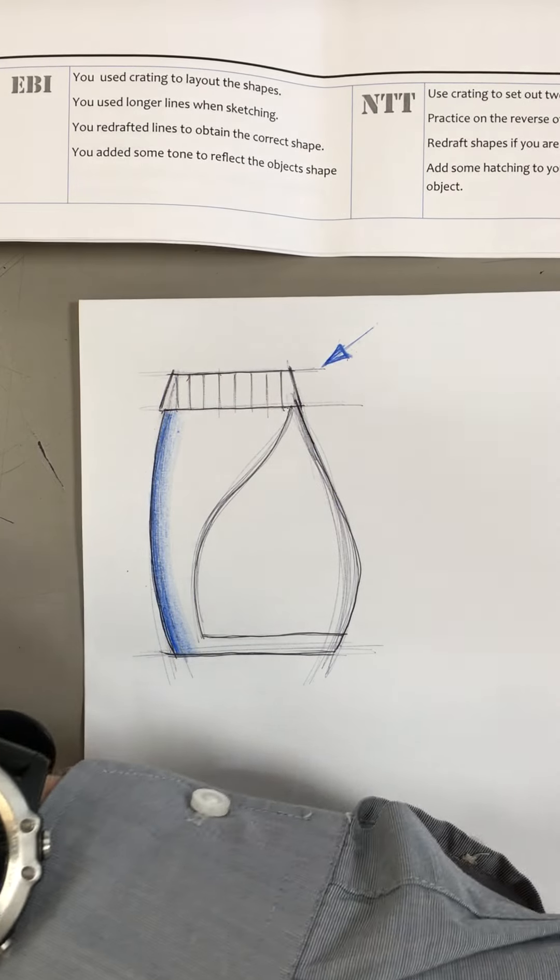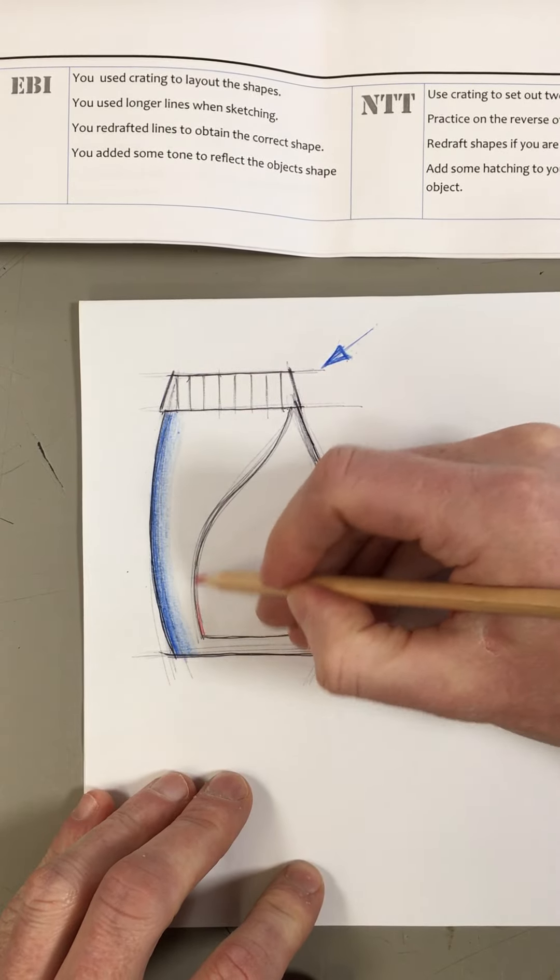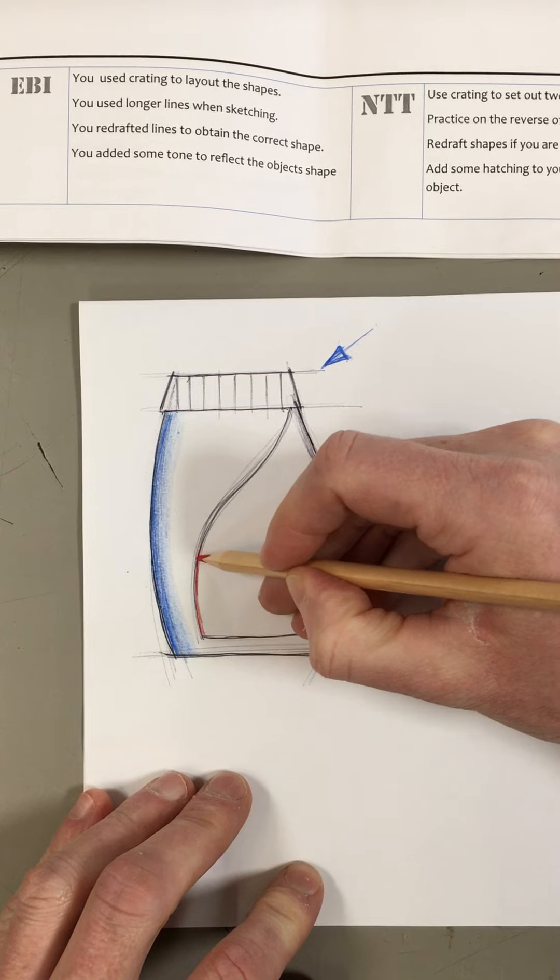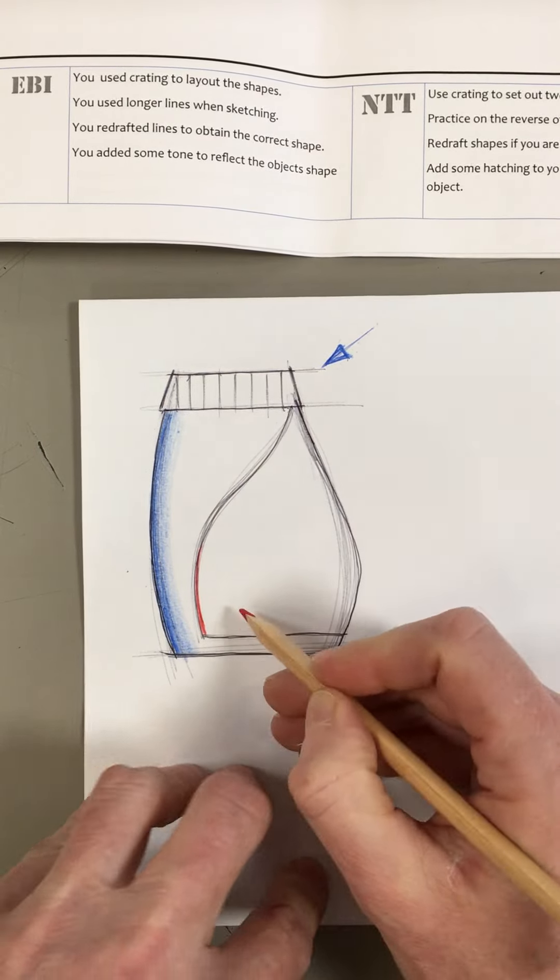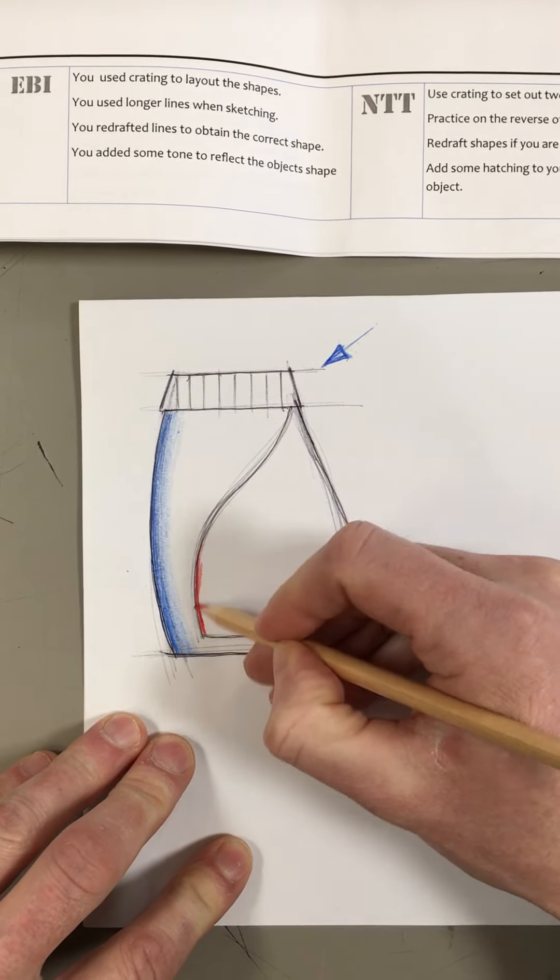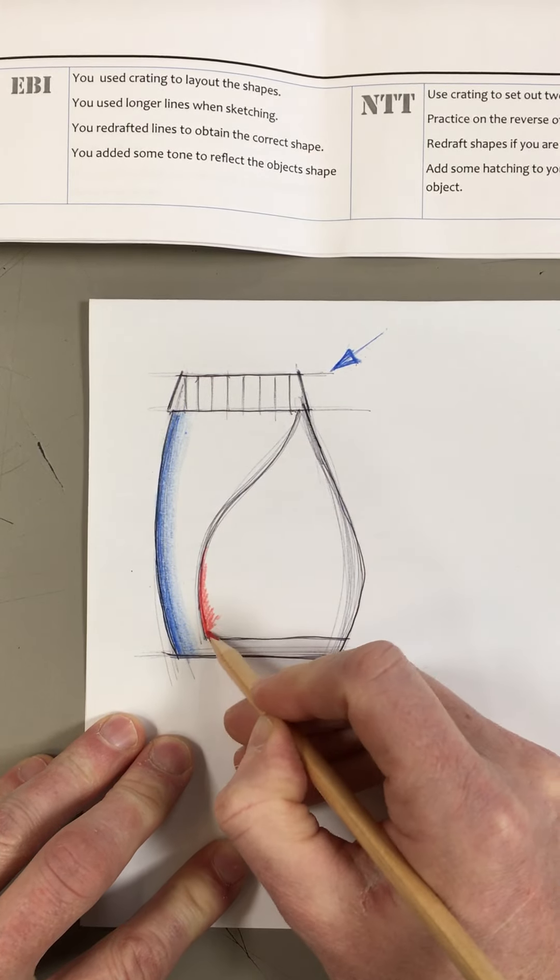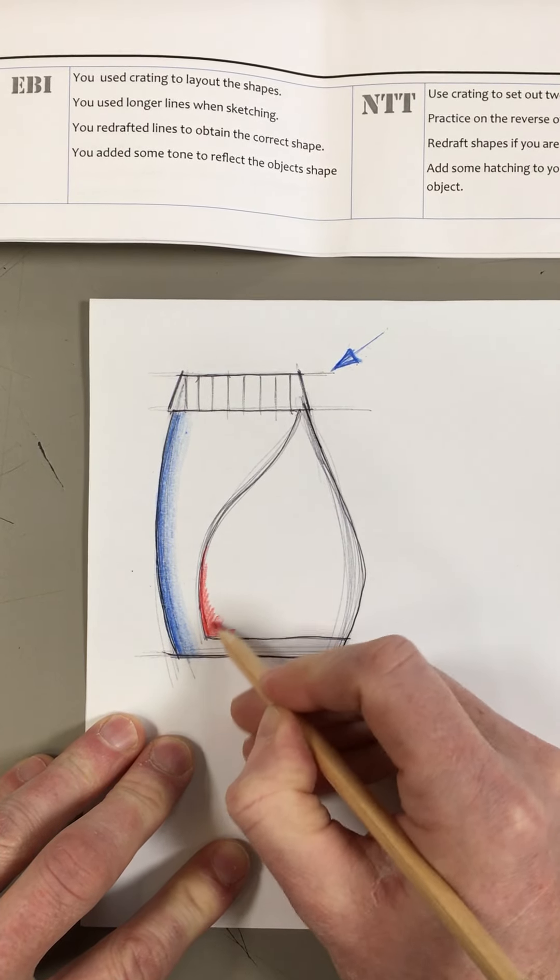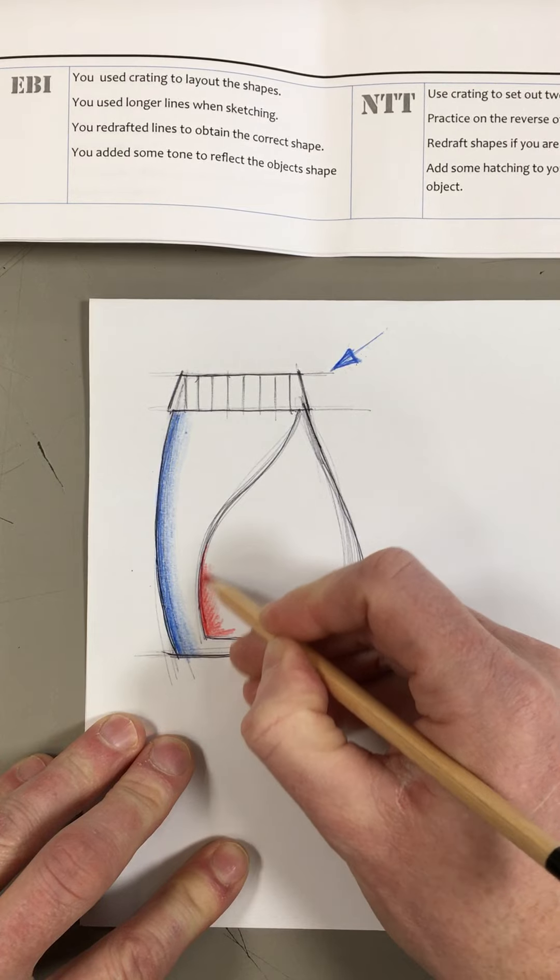You might put something where you've got an area where you maybe have a different material or a different function, and you could put a slightly different tone on it or a different color again.